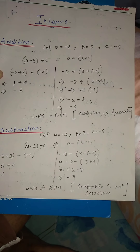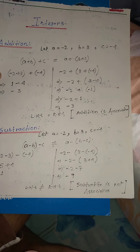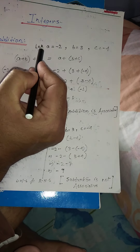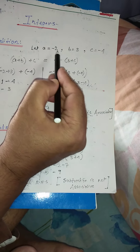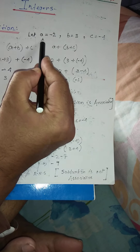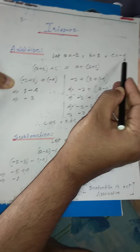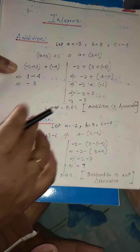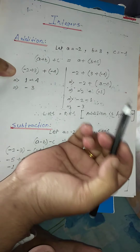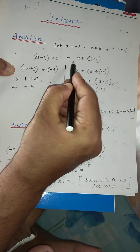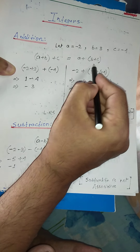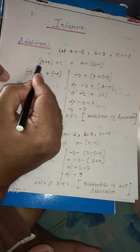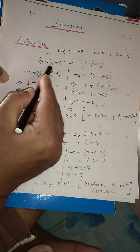Now we'll learn the associative property for integers. The first operation is addition. Since we are dealing with integers, I have kept a combination of positive and negative numbers. So a is minus 2, b is 3, and c is minus 4. I will keep this choice for all the other operations also. The property states: (a + b) + c = a + (b + c). Let's solve the left-hand side first.